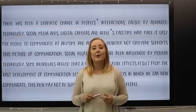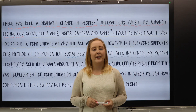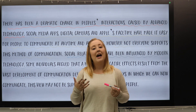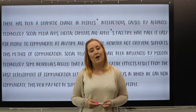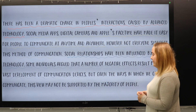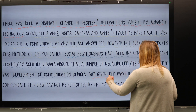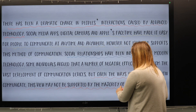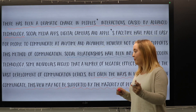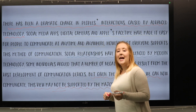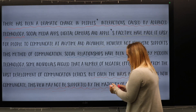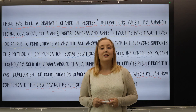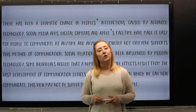The final part is our thesis — our general idea or feeling on the matter, given in a very formal way. The sentence 'But given the ways in which we can now communicate, this view may not be supported by the majority of people' is the thesis. By using the negative 'not be supported' alongside 'majority of people,' we are clearly stating that we are with the majority and think that technology has had a positive impact on social interactions.